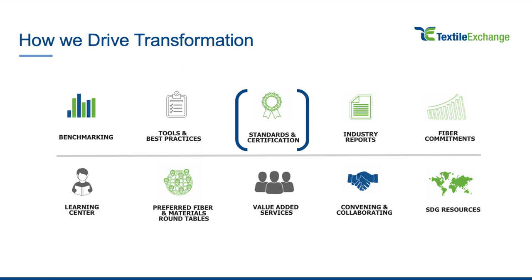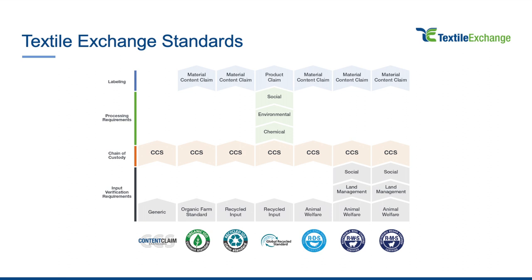These standards have been developed by stakeholders in the industry as well as members of civil society. The standards are designed to ensure chain of custody for preferred fiber materials and to help end users make claims on their finished goods. Our family of standards has also grown in the past few years. On the farm and input level, Textile Exchange currently owns the Organic Content Standard, Recycled Content Standard, Global Recycle Standard, Responsible Down Standard, and the Responsible Animal Fiber Framework, which includes responsible wool, responsible mohair, and the newly added Responsible Alpaca Standard. As materials move through the supply chain, the Content Claim Standard ensures chain of custody is upheld for these certified materials.